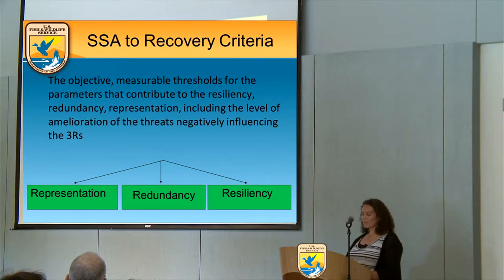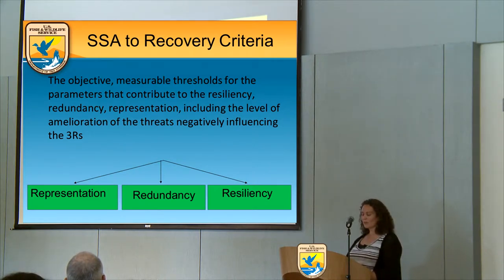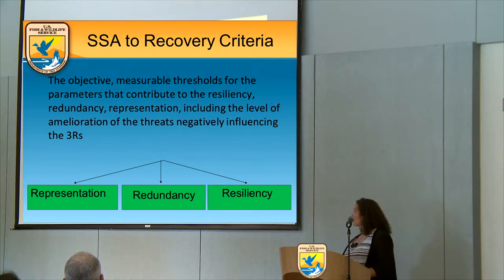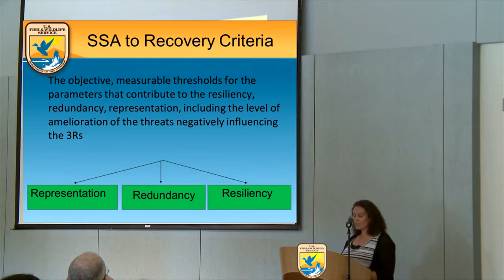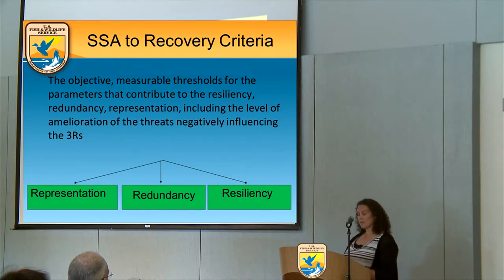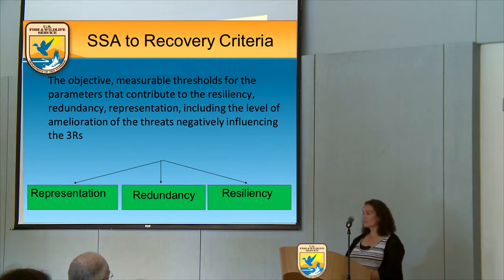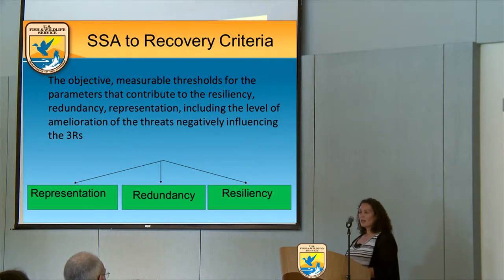The recovery criteria are objective measurable thresholds for the parameters that contribute to resiliency, redundancy, and representation, including the level of amelioration of factors negatively influencing the three R's — essentially the threats. The types of criteria we're developing aren't really changing — population size, habitat quality, genetic makeup, survivorship — but what has changed is that we're ensuring we're linking them back to the three R's. If a certain population size is necessary, it's because we've determined resiliency is an issue; if number of populations is a criterion, we're addressing redundancy.